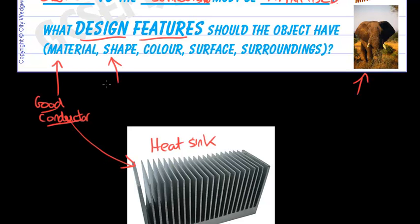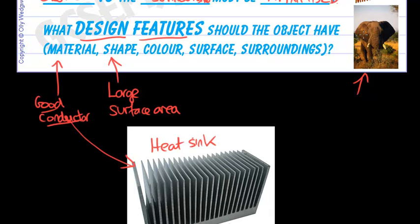The shape must have a large surface area. Look at this heat sink — it's got a huge surface area because of all of these fins and the surfaces of the fins. We've quadrupled or even more the surface area of this, which would otherwise be just a cuboid. In an elephant, they have very large ears — again, increasing the surface area.